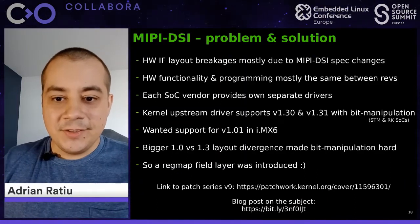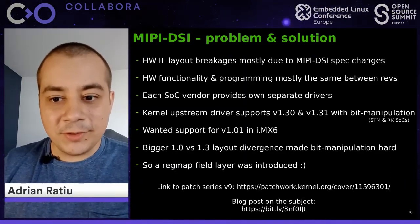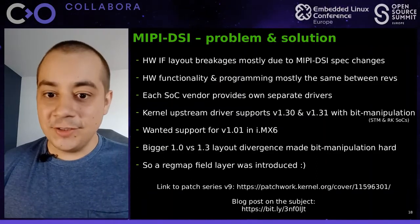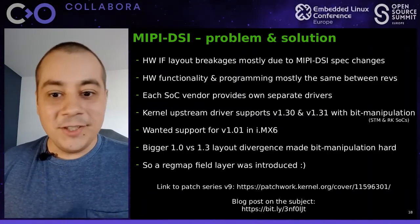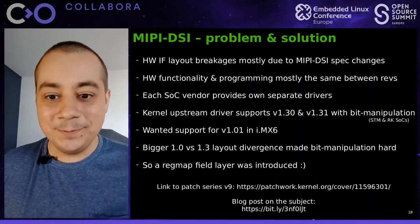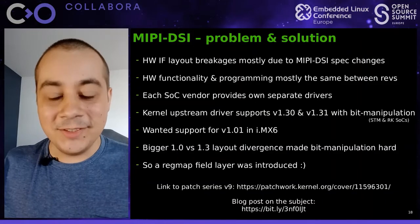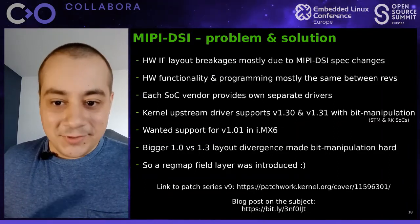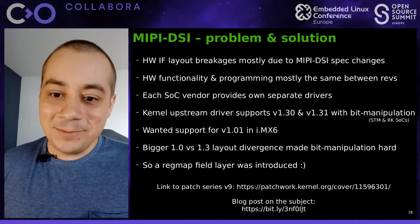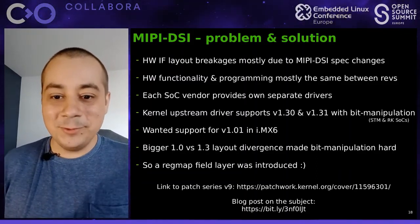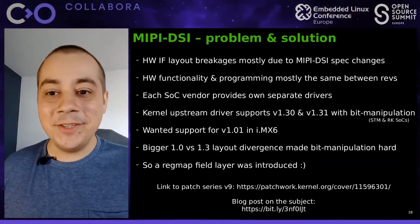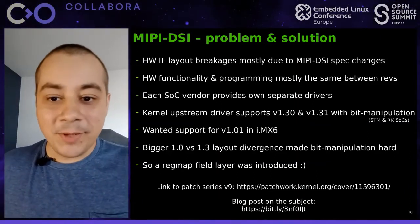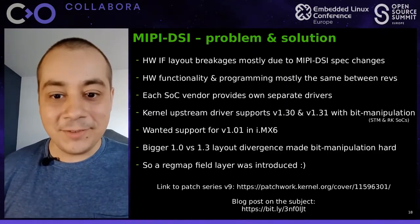There was an upstream kernel driver implementing version 1.3 of the MIPI DSI spec, but we wanted to add support for the host controller present on IMX6, which is older than those on Rockchip and STM. The register interface breakages are mostly driven by the spec version. Registers for versions 1.30 and 1.31 were very close to each other, but once we wanted to add support for the 1.0 controller on IMX6, the register differences became quite big and hard to handle with bit manipulation. So we turned to regmaps and added a regmap field. The patch has reached version 9 and hopefully will get merged soon.